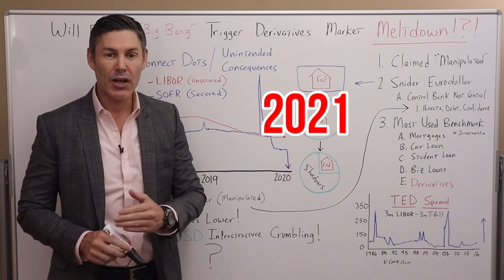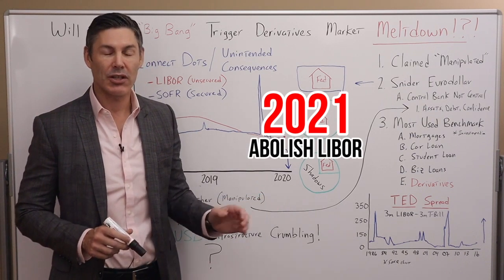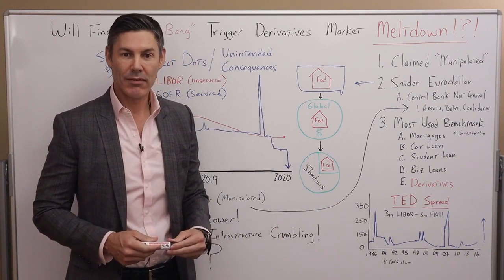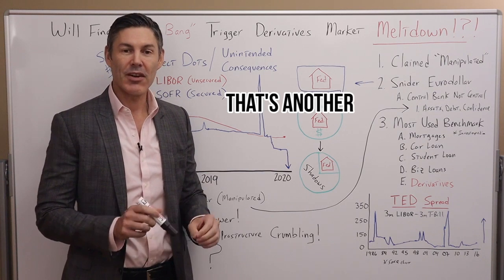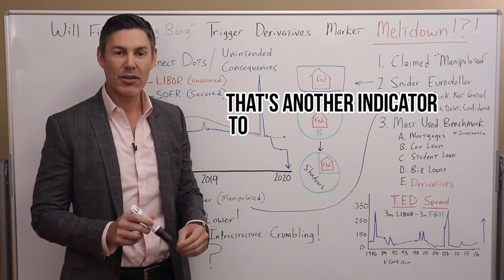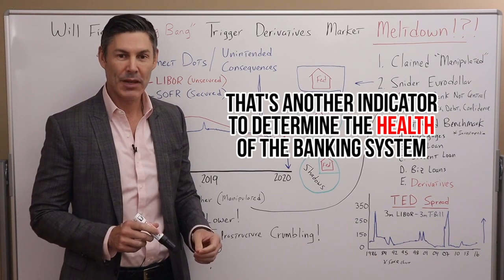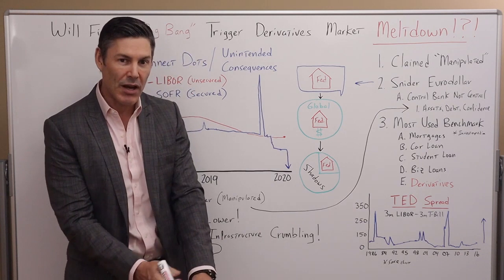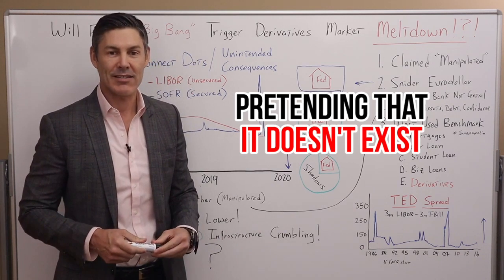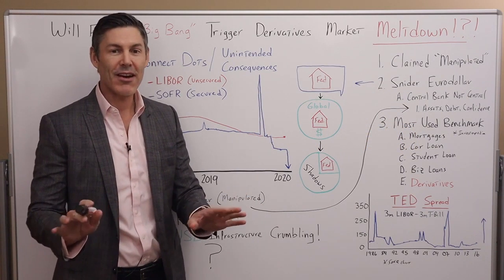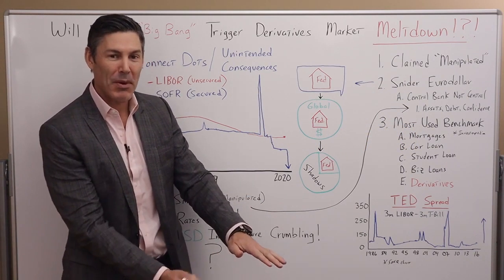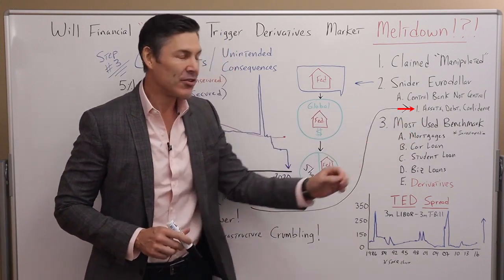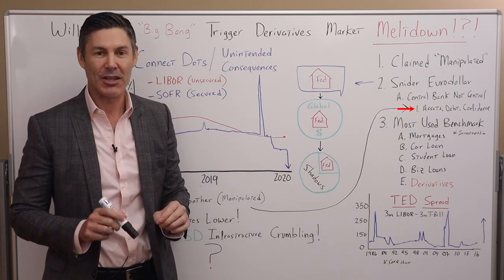In 2021, they're going to completely abolish LIBOR. So if there's no LIBOR, there's no TED spread. And if there's no TED spread, that's another indicator we lose to determine the health of the banking system. So the Fed is just taking away all of this data, sweeping it under the rug and pretending it doesn't exist — nothing to see here, let's just forget about that pesky TED spread. It goes back to their needing to instill confidence in the overall market.